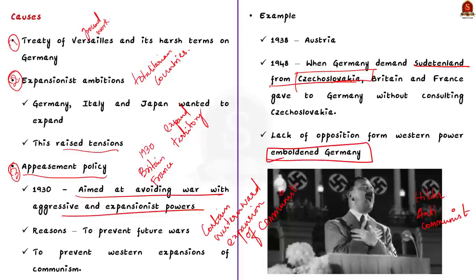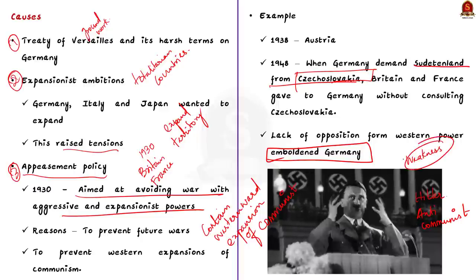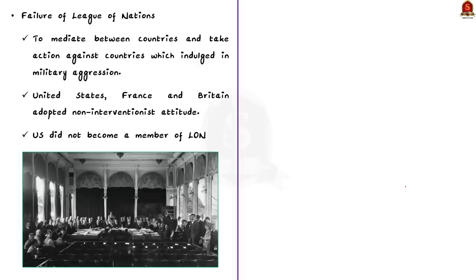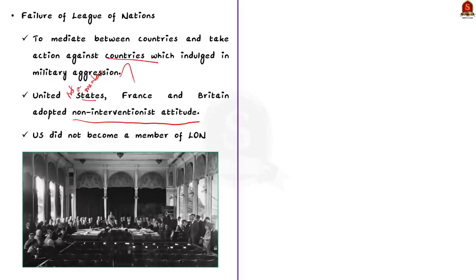Hitler saw the Western powers' reluctance to challenge him as a sign of weakness, which encouraged further aggression. For example, when Hitler occupied Austria in 1938 and demanded that the Sudetenland — a German-speaking region of Czechoslovakia — be given to Germany, Britain and France did not try to stop Germany. This policy of appeasement emboldened Hitler. The last major cause is the failure of the League of Nations. The League was expected to mediate between countries and take action against military aggressors, but the United States was not interested in playing a global role and did not become a member. France and Britain maintained a non-interventionist attitude, resulting in the League remaining an ineffectual international body.